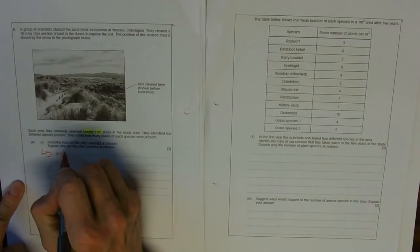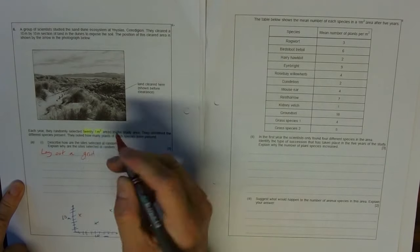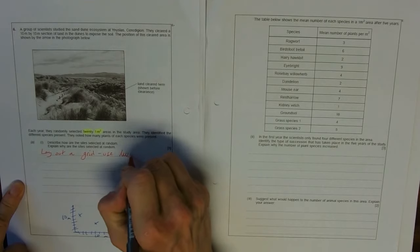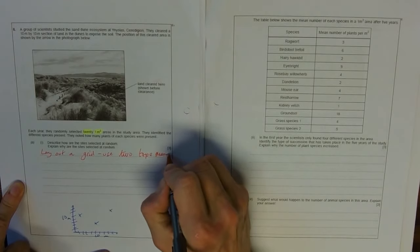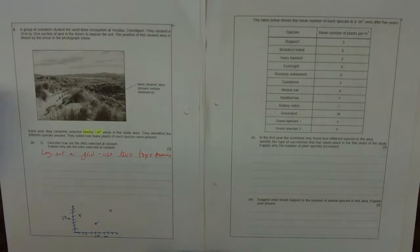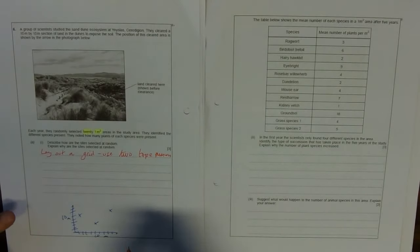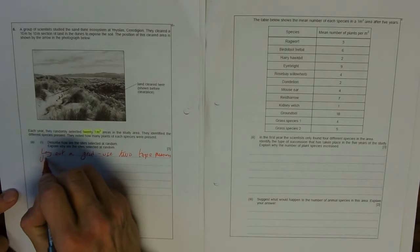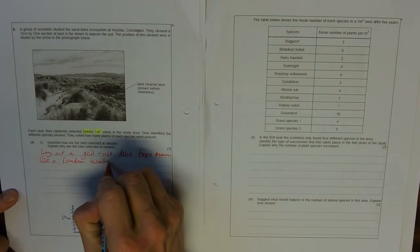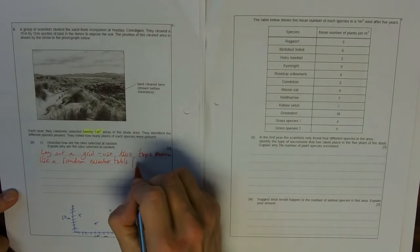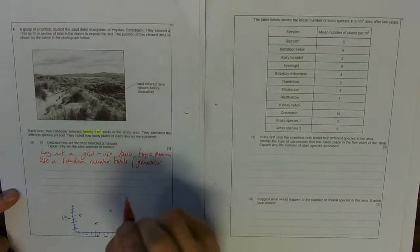So how are the sites selected at random? So you'd lay out this grid with two tapes. So lay out a grid, you'd use two tape measures. And we need to talk about the randomness. We need a random number table or a random number generator. So use a random number table or generator. And that will give you your coordinates.